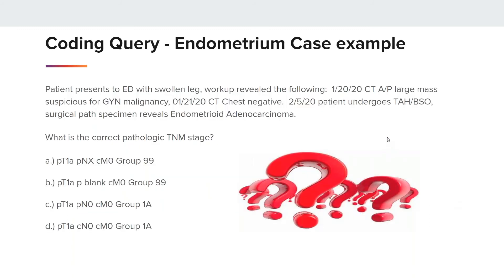Our next and final example is for endometrium. The patient presented to the emergency department with a swollen leg. On 1-20-20, a CT of the abdomen and pelvis showed a large mass suspicious for a gynecologic malignancy. On 1-21-20, a CT chest was negative. On 2-5-20, the patient undergoes a TAH-BSO. The surgical path specimen reveals endometrioid adenocarcinoma. What is the correct pathologic TNM stage? Is it A: PT1A, PNX, CM0, group 99; B: PT1A, P-blank, CM0, group 99; C: PT1A, PN0, CM0, group 1A; or D: PT1A, CN0, CM0, group 1A?